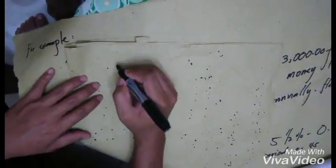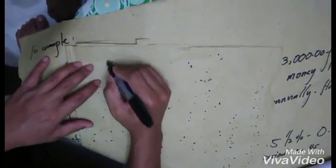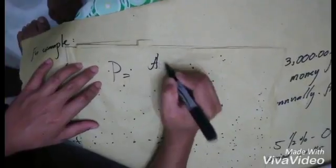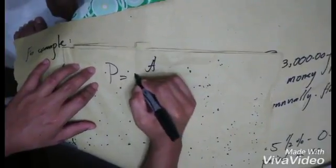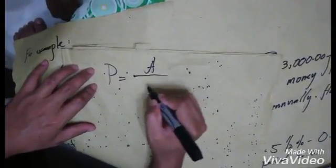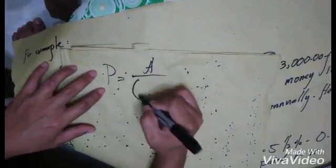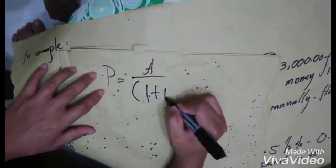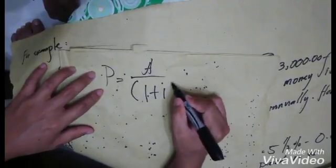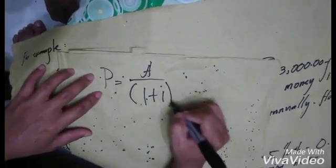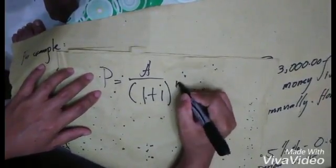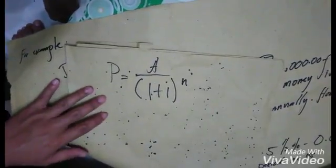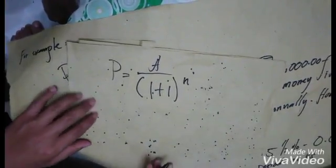This is the formula. P is equal to the amount of interest over (1 plus interest rate) raised to the number of periods.